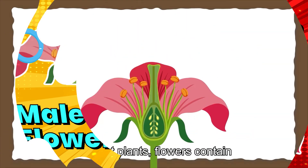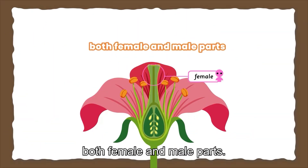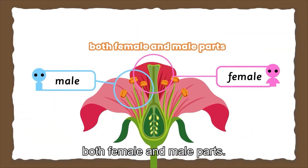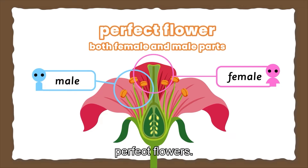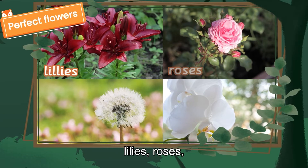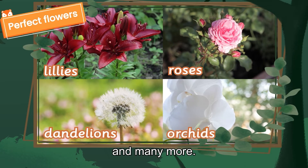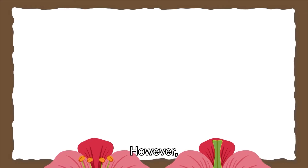In most plants, flowers contain both female and male parts. These flowers are classified as perfect flowers. Examples of perfect flowers include lilies, roses, dandelions, orchids, and many more.